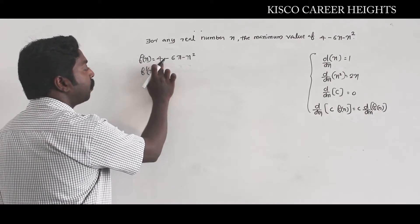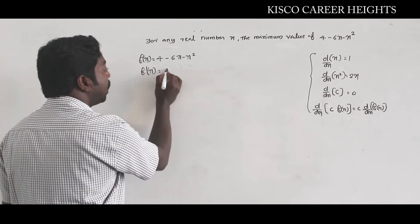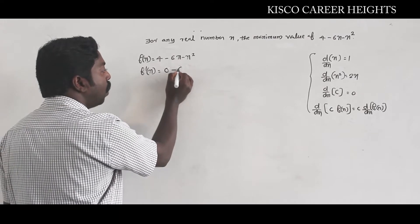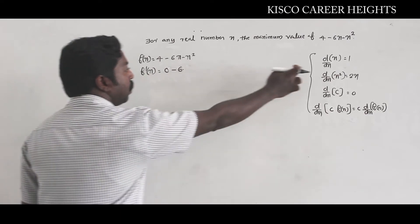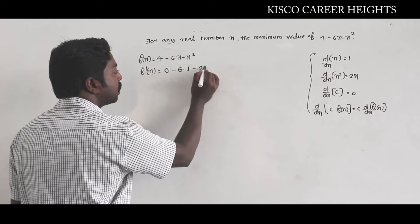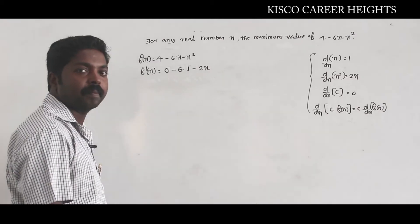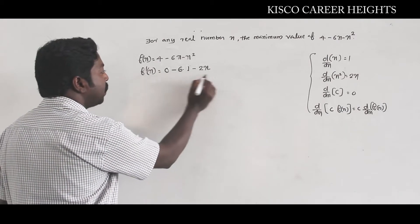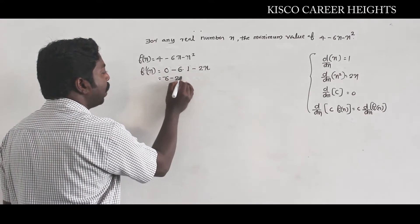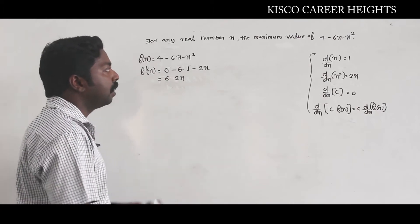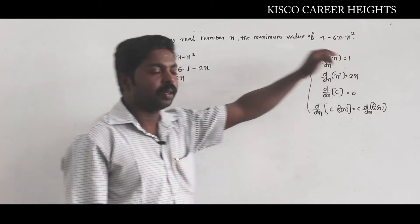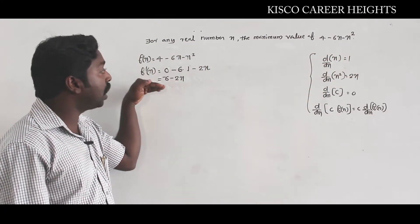The derivative of this entire expression is represented as f'(x). The derivative of 4, being a constant, vanishes. For -6x, since 6 is a constant, take it outside and differentiate x, giving 1. The derivative of -x² is exactly -2x. So the derivative simplifies to -6 - 2x.